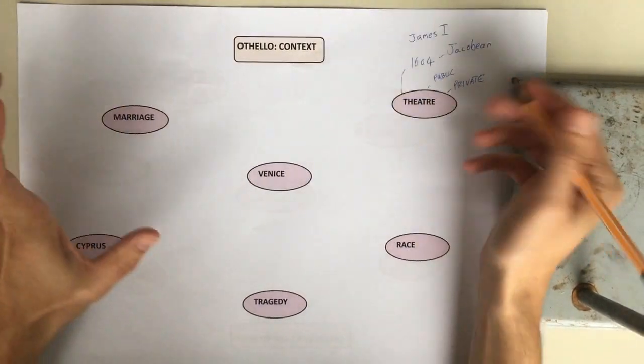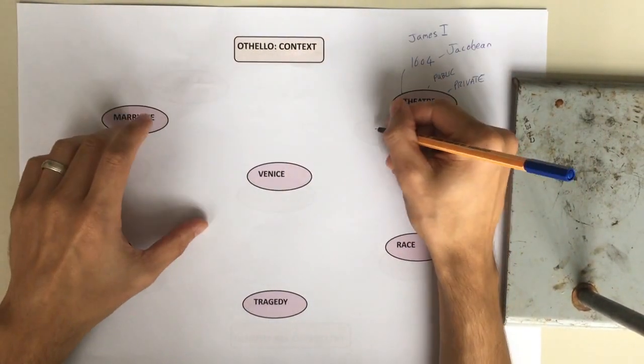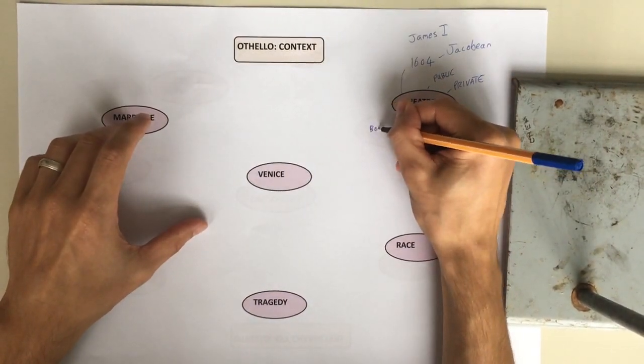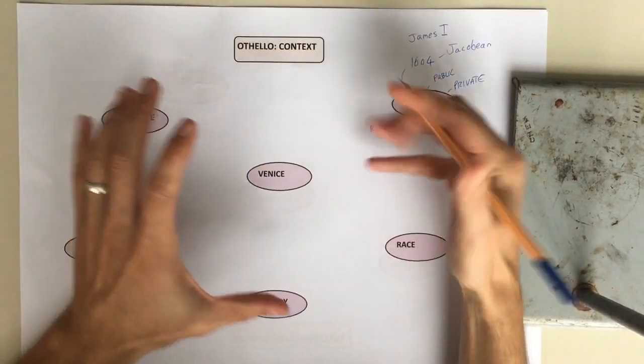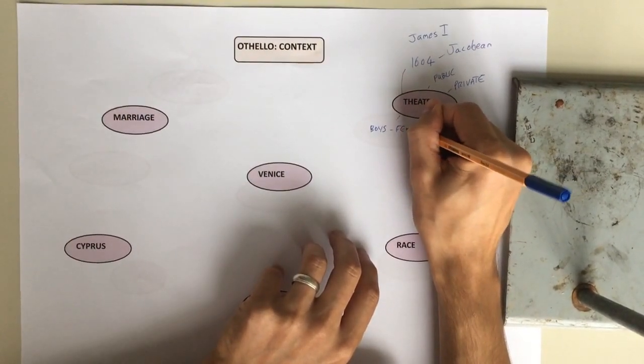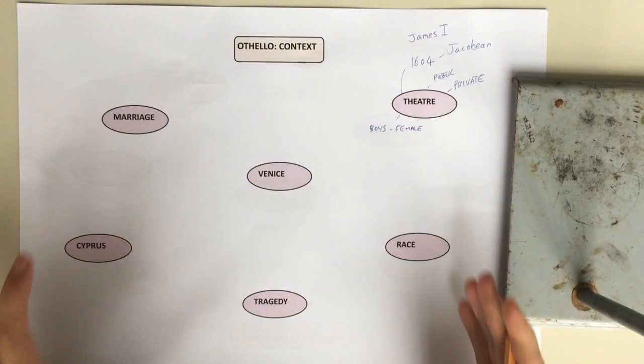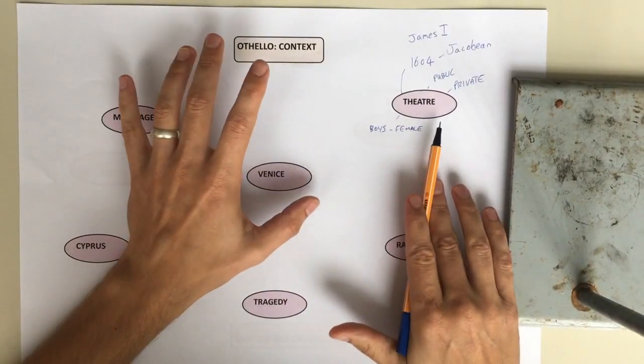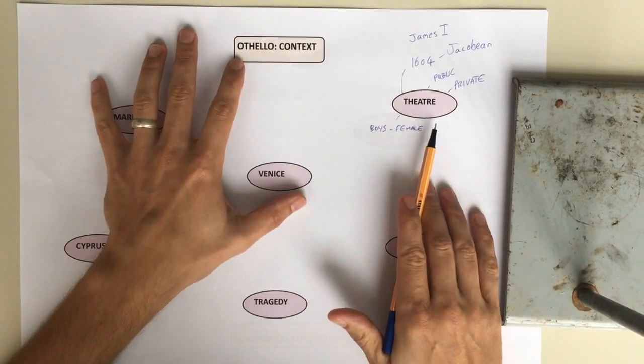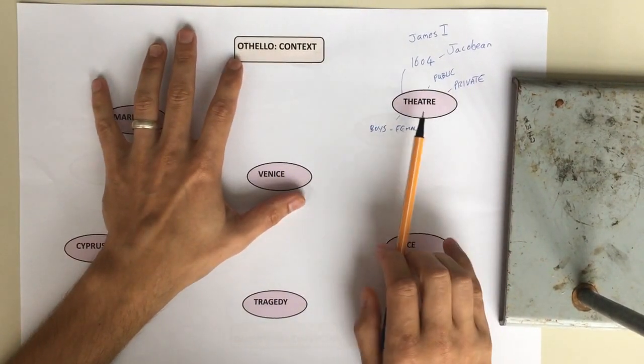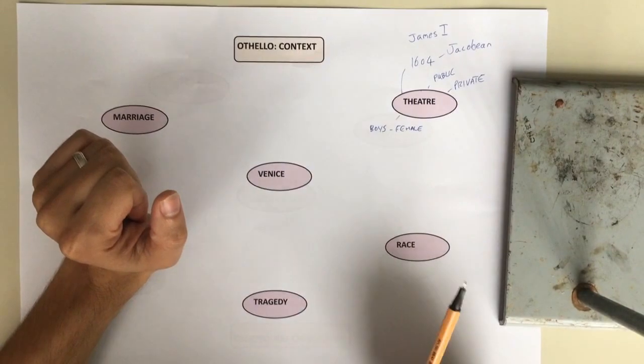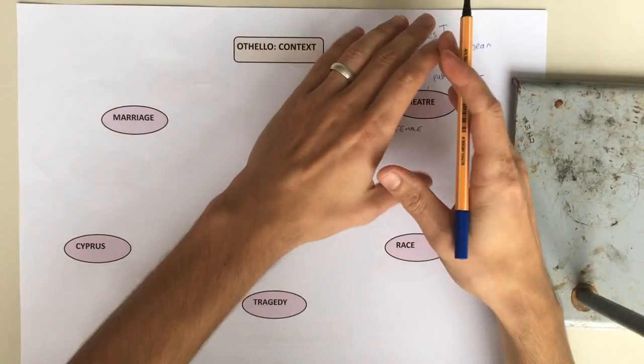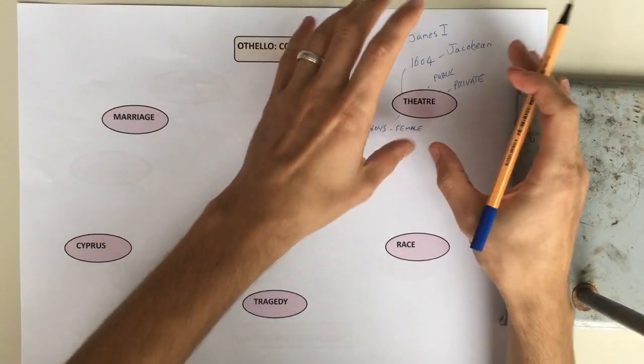Some of the things that most people are aware of, but obviously we would have boys, younger boys, or up to younger teenage boys, playing the female parts. So there were no female actors at this time. It's another 30 or 40 years until you get female actresses in the theatre, so all of the female parts are played by boys.